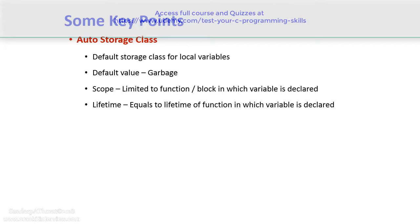Auto Storage Class is the default storage class for local variables. The default value in this case is a garbage value. The scope of an automatic or local variable is limited to the function or block in which that variable is declared, and the lifetime of such variables equals the lifetime of the function in which the variable is declared.